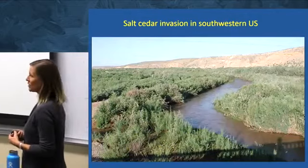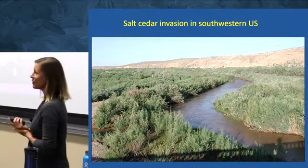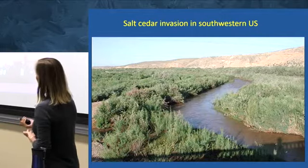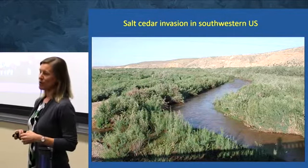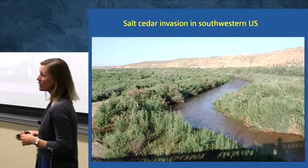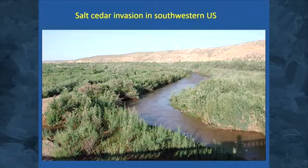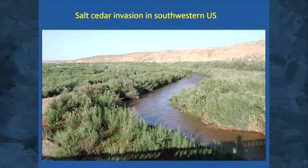Invasive species have really changed the fire frequency in Southern California. Another example from the southwestern US is tamarisk or salt cedar, which has taken over riparian areas in deserts, displacing native vegetation like cottonwoods. People are concerned because it grows in high density with really high transpiration rates, changing the hydrology quite a bit. But it's controversial because it actually provides a lot more habitat for migratory bird species, making it one of the really controversial species in invasion biology.